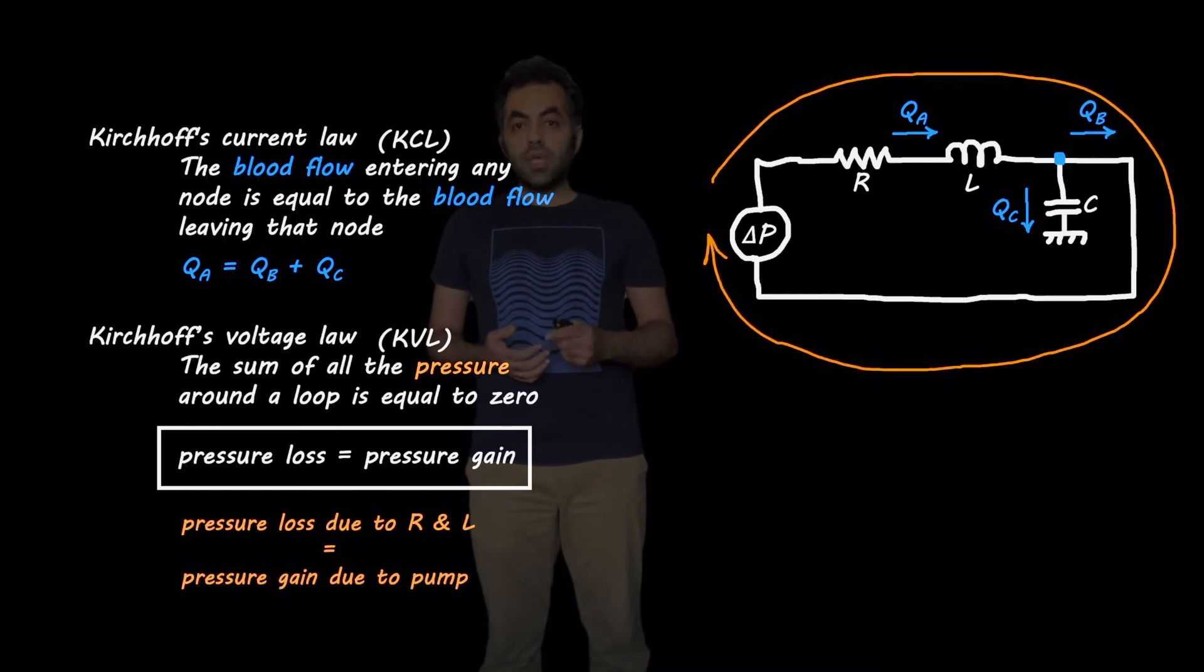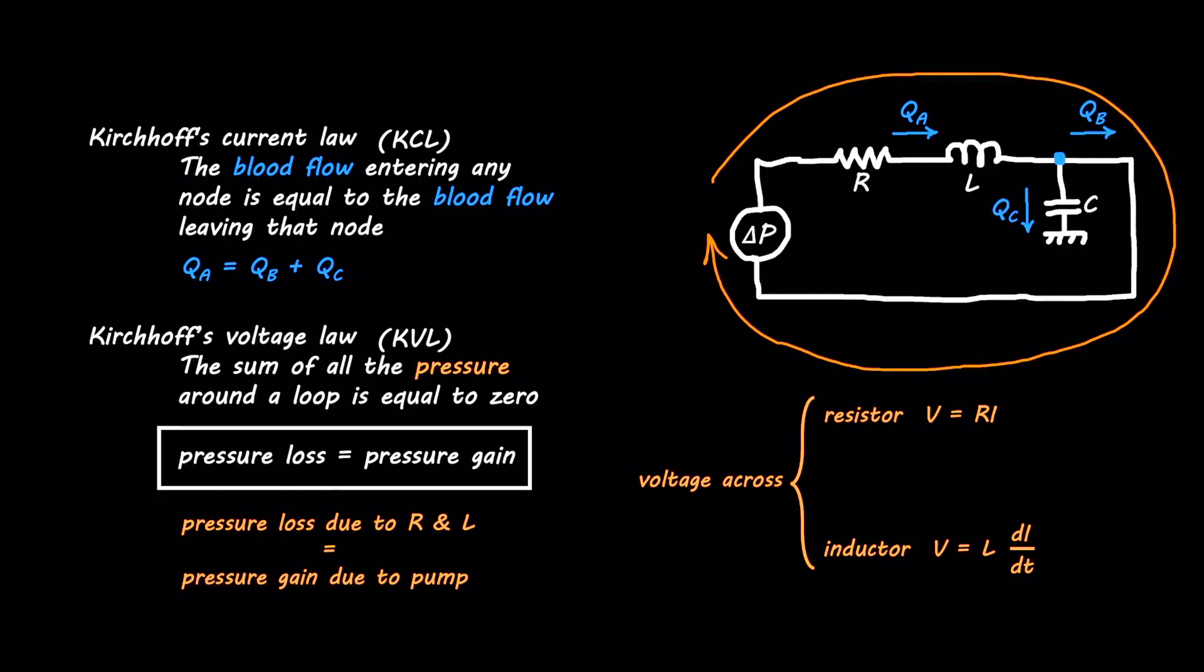For example, in this loop, in this circuit that we have here, there is only one loop. In this loop, there is a resistor and an inductor. So the pressure loss due to the resistor and the inductor should equal the pressure gain due to pump or delta P. But based on Ohm's law and Faraday's law and other laws that we have in electrical engineering, we can find the voltage across each of these elements. We know that voltage across a resistor is R×I, and in the inductor, it is L×dI/dt.